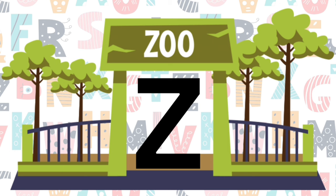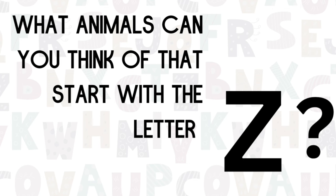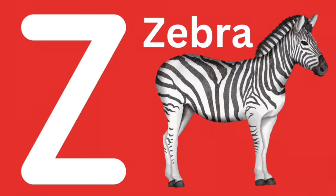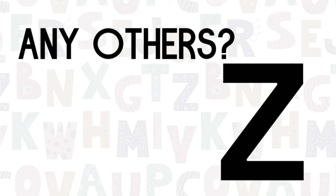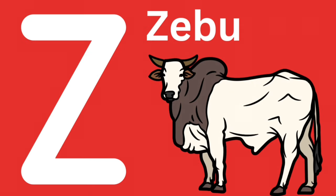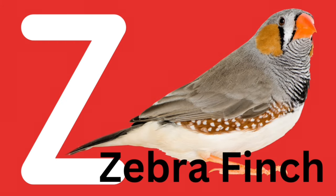Are there any animals at the zoo that start with the letter Z? The Z says Z. How about the zebra? Z-z-zebra. Are there any other animals that start with a Z? How about a zebu? Zebu is like a cow. Or the cute little zebra finch — it's just a little bird.